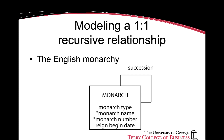Entities can also have recursive one-to-one relationships. An example is a succession relationship — who succeeds which individual. In this case, the example is the English monarchy. We have a monarch entity with a composite primary key of monarch name and monarch number, plus two other attributes: monarch type and reign beginning date. One monarch is related to another monarch, indicating who preceded the current monarch.